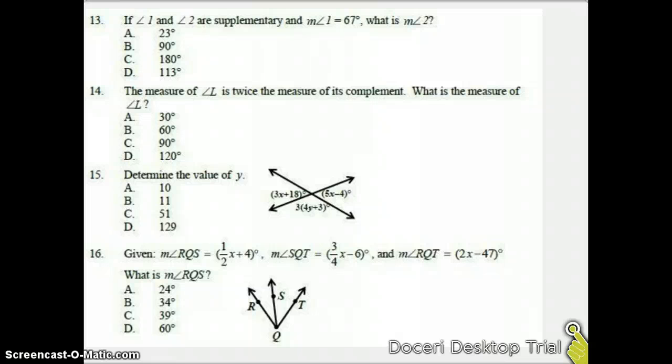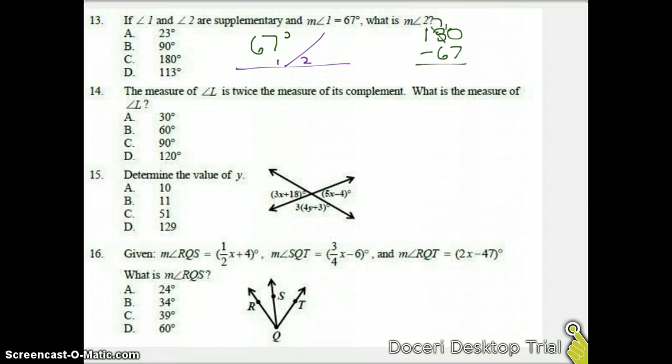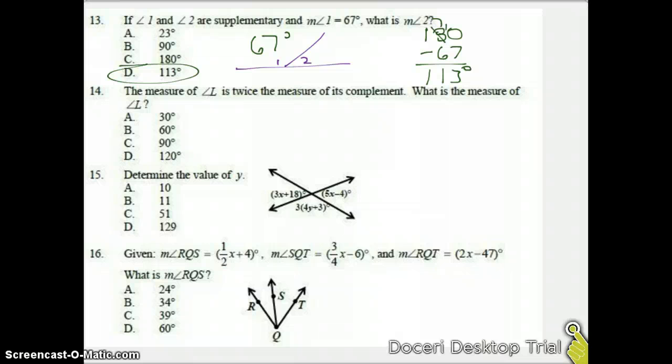Number 13. We have 1 and 2 are supplementary. So let's draw that. Here's 1 and 2. And we know angle 1 is 67 degrees. So what does 2 have to be? Well, if it's supplementary, they add up to 180. So we're going to take 180, subtract 67, and we're left with 113. So that's going to be our answer D. Make sure you're careful on this one and not choosing complementary. In that case, you would have gotten an answer of A because you would have done 90 minus 67. Supplementary adds to 180.